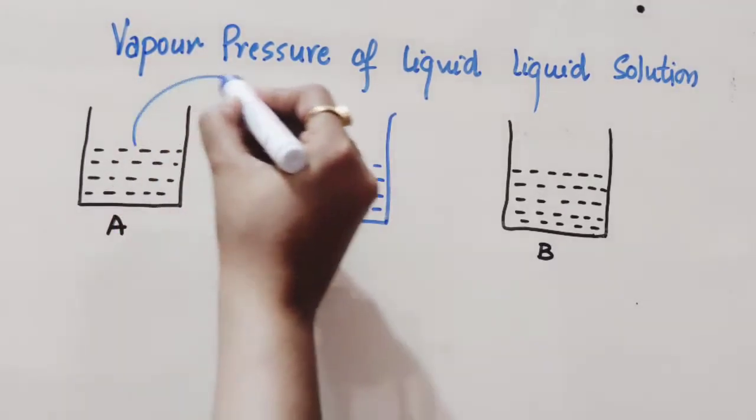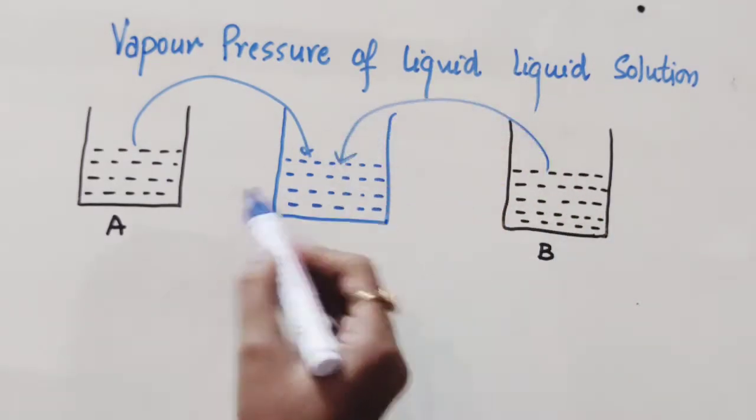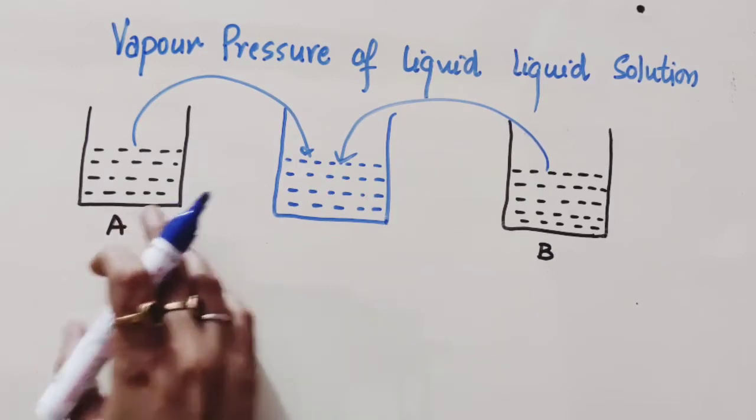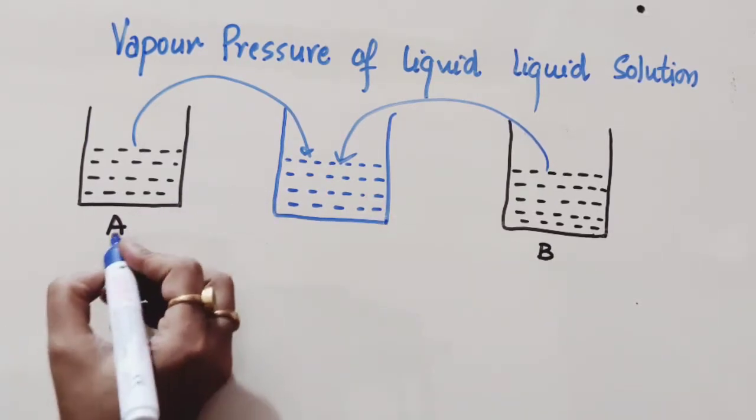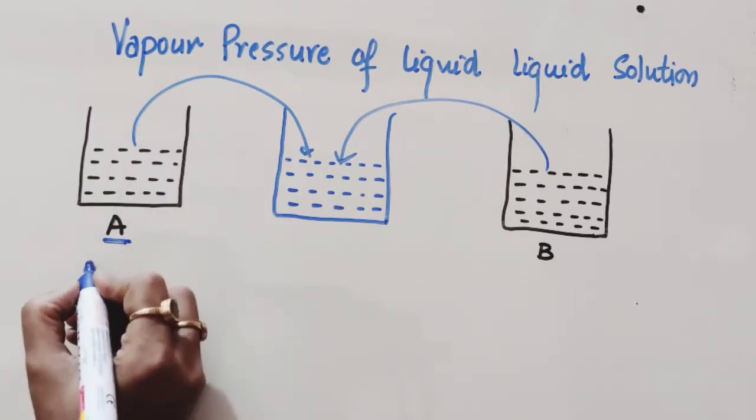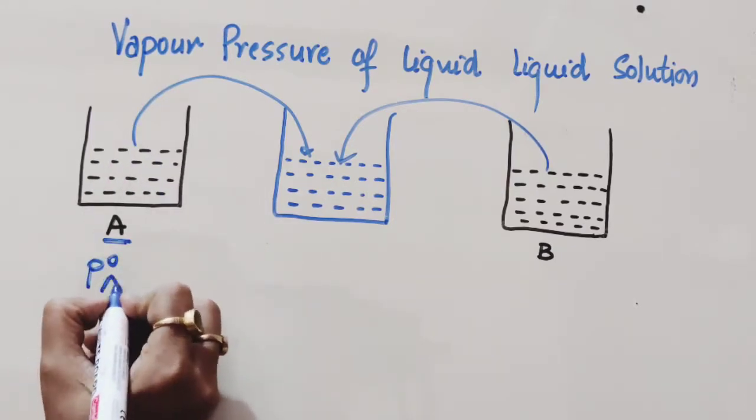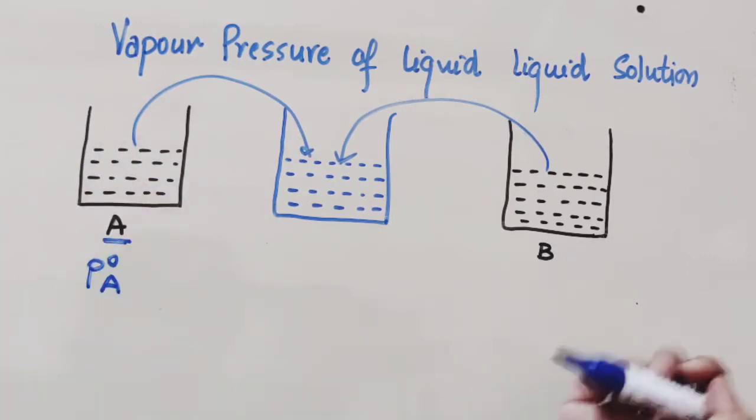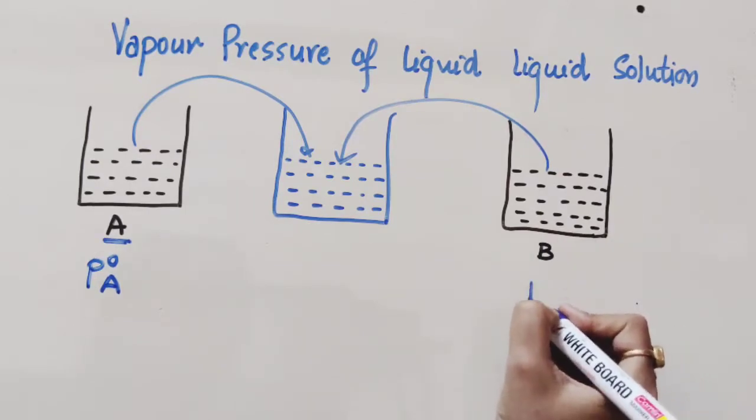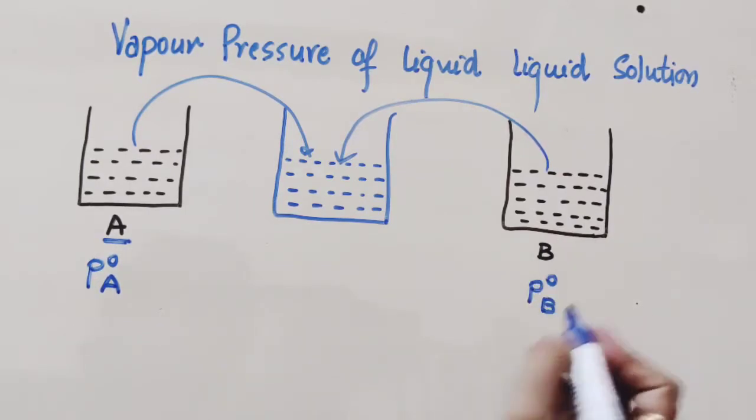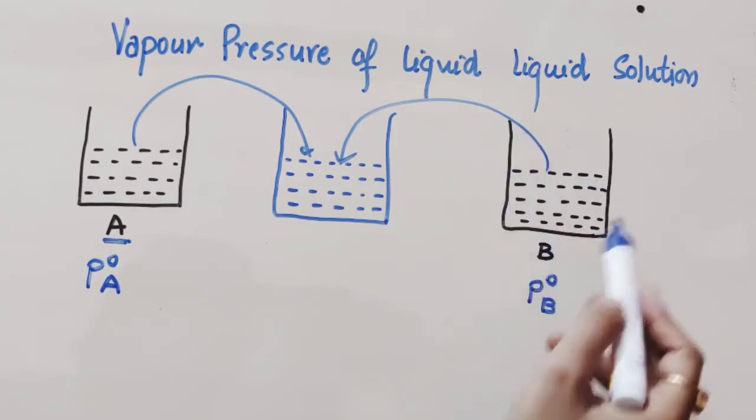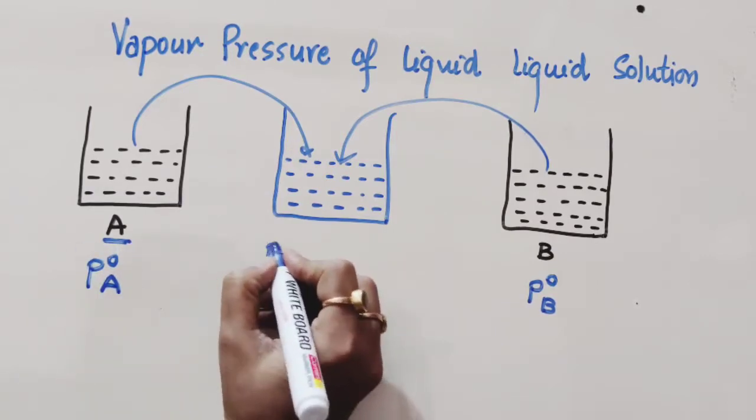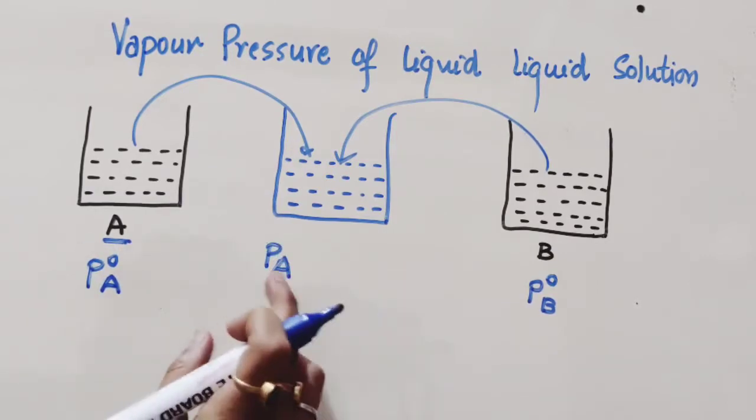When we take an amount of A and an amount of B and mix them together to form a solution, the question arises: what is the pressure of the components in this solution? For example, this liquid A is represented as P⁰A, that is the pressure of component A when it is pure. Similarly, when we have only liquid B, it's represented as P⁰B, the pressure of component B when it is pure. But when both are mixed, the pressure P⁰A changes into PA, which is known as partial pressure.